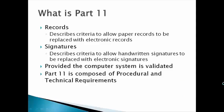Part 11 deals with records. It describes the criteria to allow paper records to be replaced with electronic records. It discusses signatures and describes the criteria to allow handwritten signatures to be replaced with electronic signatures. And all this is predicated on the computer system housing the records and signatures being validated according to standard computer system validation procedures.